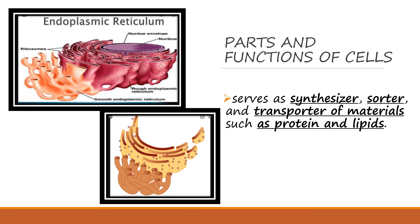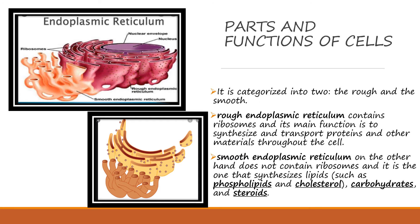We also have the endoplasmic reticulum, or ER, which serves as a synthesizer, sorter, and transporter of materials such as proteins and lipids. The endoplasmic reticulum categorizes into two: the rough endoplasmic reticulum, which contains ribosomes and functions to synthesize and transport proteins and other materials throughout the cell; and the smooth endoplasmic reticulum, which does not have ribosomes and functions to synthesize lipids such as phospholipids, cholesterol, carbohydrates, and steroids.